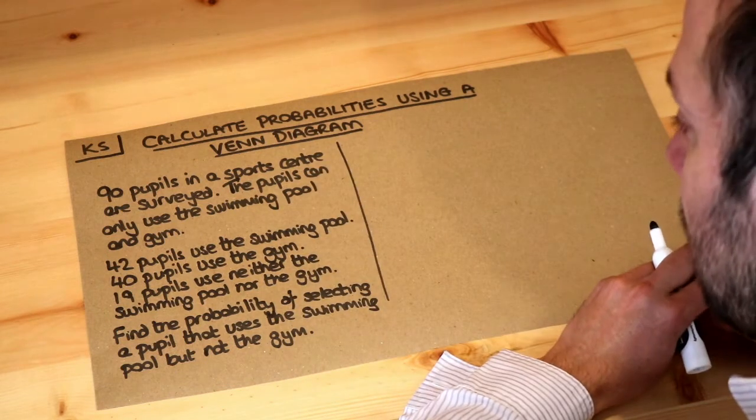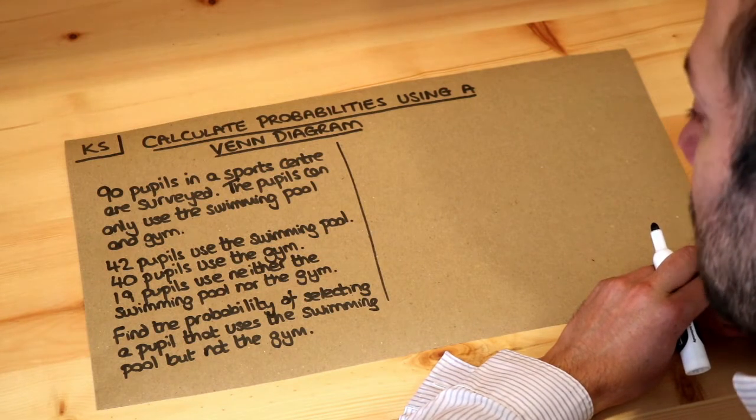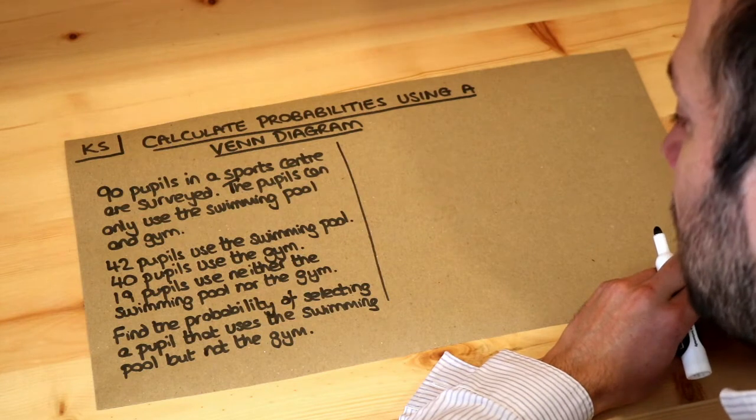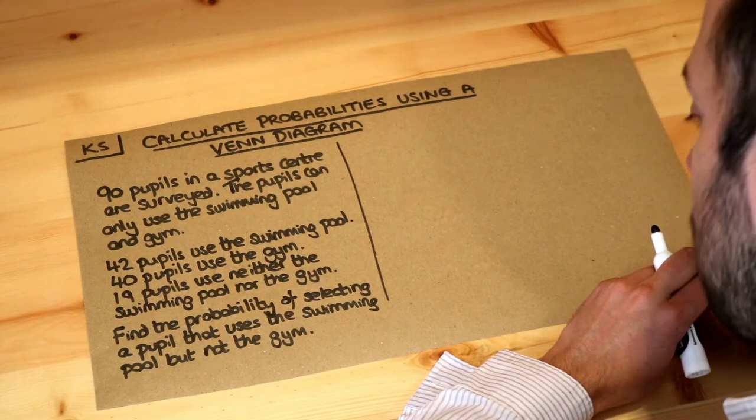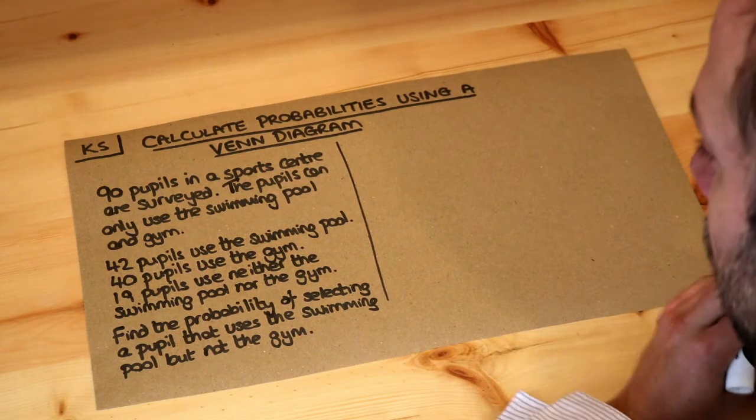90 pupils in a sports centre surveyed, the pupils can only use the swimming pool and gym. 42 pupils use a swimming pool, 40 pupils use a gym, 19 pupils use neither the swimming pool nor the gym. Find the probability of selecting a pupil that uses a swimming pool but not the gym.